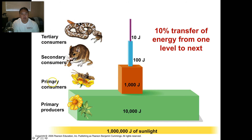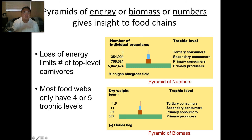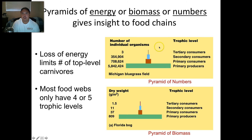So there's primary, secondary, and tertiary. But there's really no fourth or fifth because there's no more energy left to be eaten. Pyramids of energy, or pyramids of biomass, give us insight into what the food chains are. The loss of energy limits how many top-level carnivores there are. In a bluegrass field, there are almost 6 million different types of primary producers, but there are only three tertiary consumers, because again, only 10% is transferred. At most, you'll ever see four or five trophic levels — you'll never see more than five.